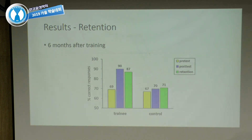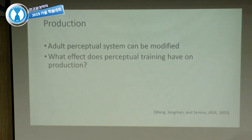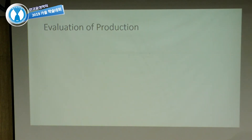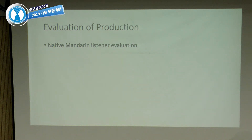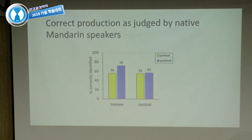This high variability training is quite effective at the suprasegmental level. The question then is whether it carries over to production, even though we only trained participants on perception. We evaluated production in two ways. First, native Mandarin listeners identified pre- and post-training productions from trainees and controls mixed together. Before training, trainees and controls were identified at about the same accuracy rate — about 55% correct. After training, trainees' productions were correctly identified at a higher rate, while controls showed no difference.